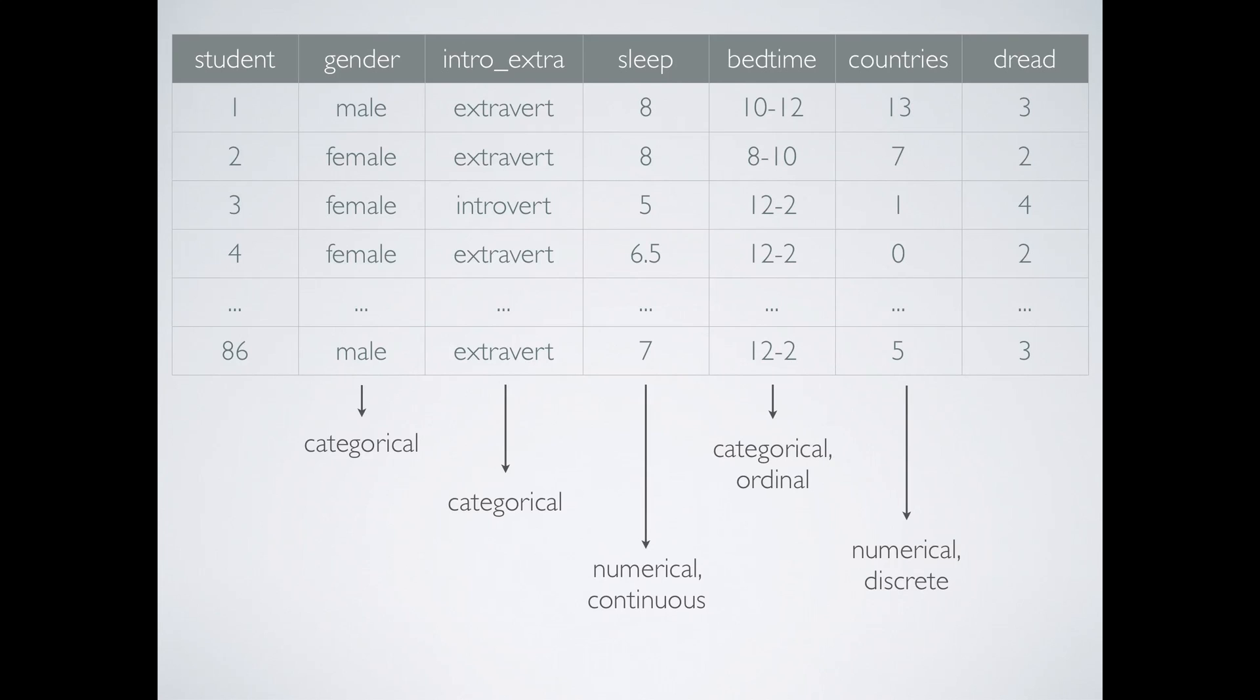How much students dread this semester on a scale of 1 very little to 5 a lot is a categorical and ordinal variable. Categories are represented by numbers, and there is an inherent ordering to them. In certain analyses, this variable could also be treated as numerical. I hope that this video has been useful for identifying variable types. Thank you for watching.